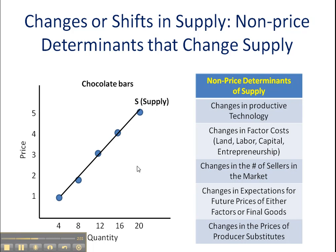Changes in factor costs — the costs that firms have to pay for land, labor, capital, and entrepreneurship. If those change, then supply in the market will either increase if these things become cheaper, or decrease if these factors become more expensive. If there is a change in the number of sellers in the market, clearly more firms supplying will increase supply, and fewer firms supplying will decrease supply.